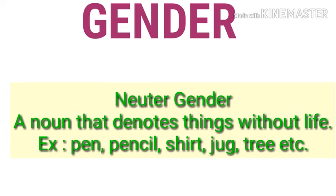The fourth kind of gender is neuter gender, which denotes things without life. Things which do not have life are known as neuter gender, and we cannot say whether they are male or female. For example, the words book, pen, and chair — all these are neuter gender, belonging to the category of neuter gender.